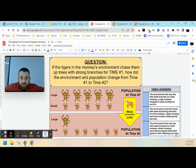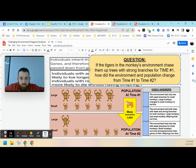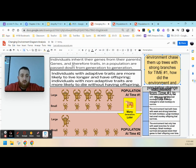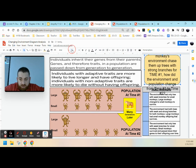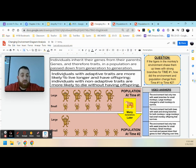All right, I think you got the right answer. Let's take a look. We know, according to our key concepts, that individuals inherit their genes from their parents, and therefore traits in a population are passed down from generation to generation. So if we have two populations at two different times, any traits that are passed down are because they inherited genes.